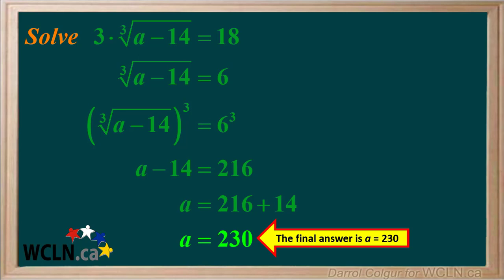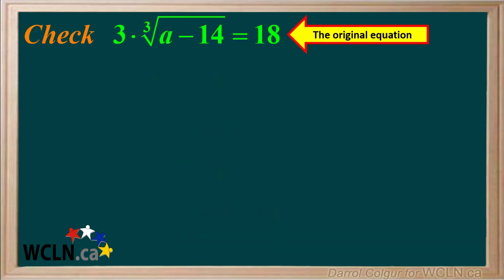What we need to do now is substitute the value 230 back in for a in the original equation and see if it works. Here's the original equation we were asked to solve. The answer we got is 230. So we'll substitute 230 into the equation for a.